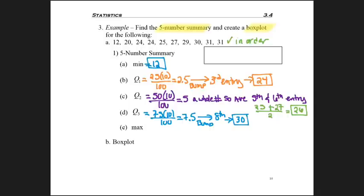And then the max, if my list is in order, is super easy to find. It's just the last number. So I've done all the work. And now I can go ahead and answer my five number summary, the 12, 24, 26, 30, and 31. Part one of my question is done.